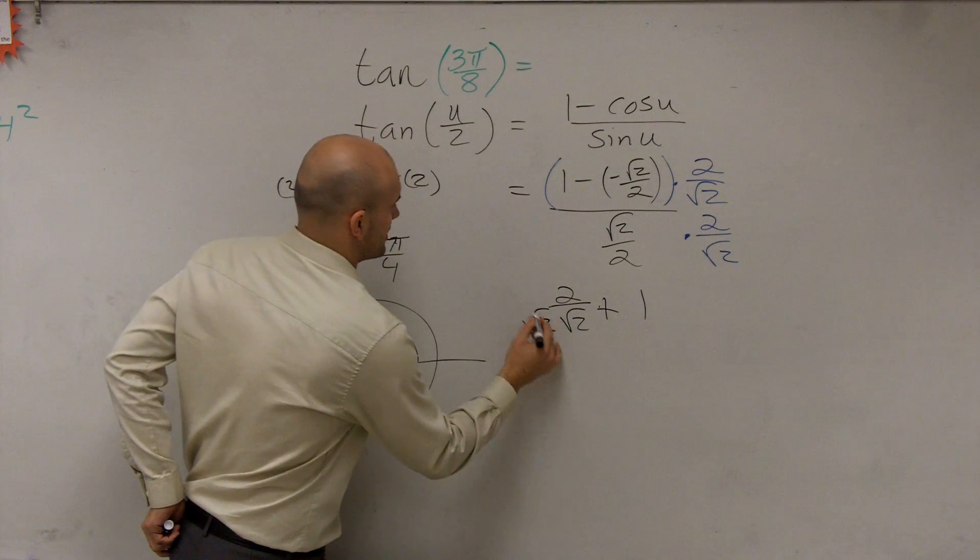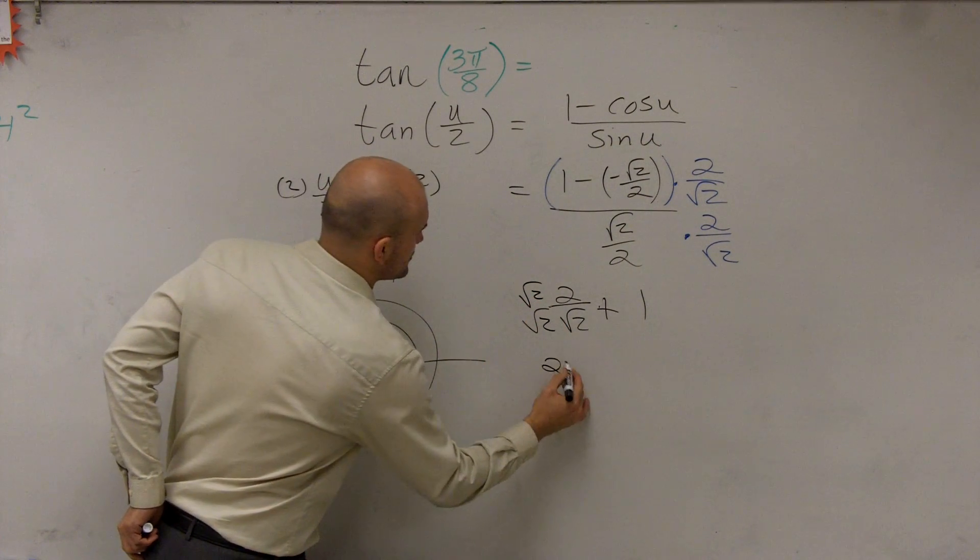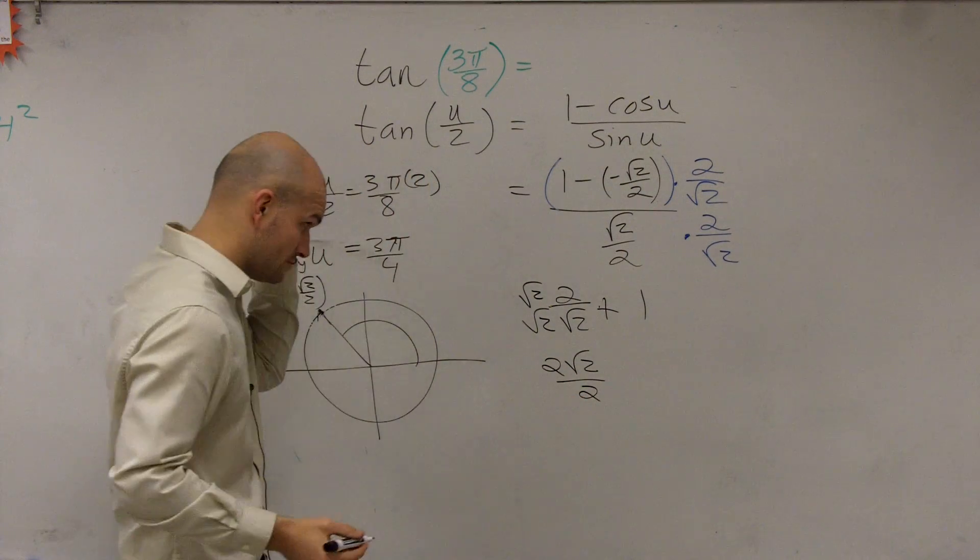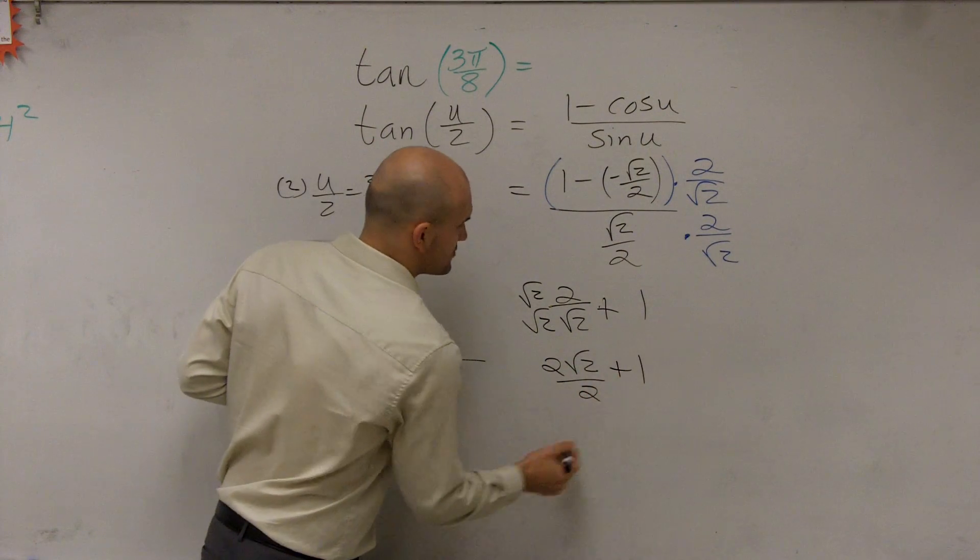You can see why. So therefore, I have 2 square root of 2 over 2 plus 1.